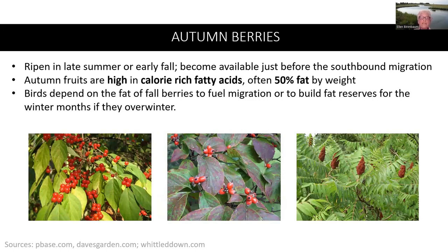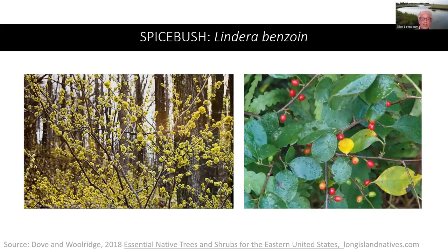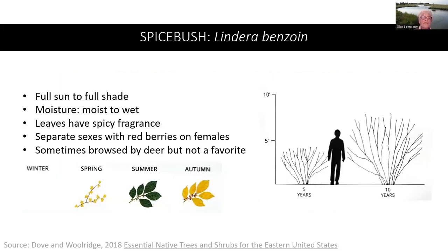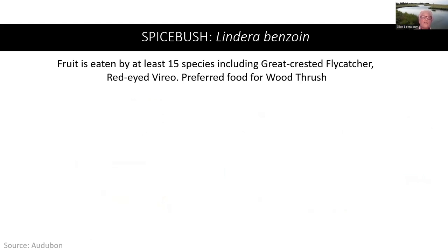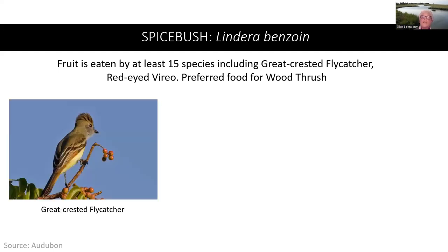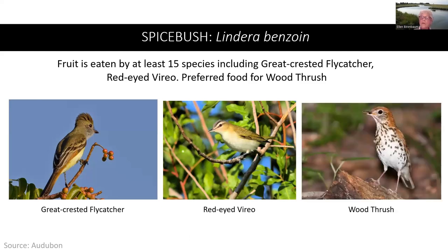The second category are autumn berries. These berries ripen in late summer or early fall and become available just before the southbound migration. Autumn fruits are high in calorie-rich fatty acids, often 50% fat by weight. Birds depend on the fat of fall berries to fuel migration or to build fat reserves for winter if they overwinter. The spice bush is an underused, multi-season shrub noted for its very early fragrant yellow flowers, red berries, and lovely yellow autumn color. There are separate sexes, with red berries on the females. It is sometimes browsed by deer but is not a favorite. The fruit of the spice bush is eaten by at least 15 species, including the great crested flycatcher, the red-eyed vireo, and the wood thrush.